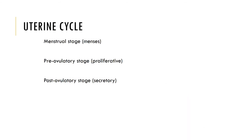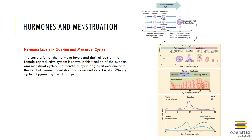The uterine cycle consists of the menstrual phase, the pre-ovulatory phase, and the post-ovulatory phase. The menstrual phase or menses is approximately days one through five, beginning with the degeneration of the functional zone of the endometrium. This degeneration is caused by constriction of the spiral arteries, which reduces endometrial blood flow. Eventually the weakened arterial walls rupture, blood pours into the connective tissues, and blood cells and degenerating tissues break away and enter the uterine cavity, lost through the external cervical os into the vagina. This process of endometrial sloughing is called menstruation.